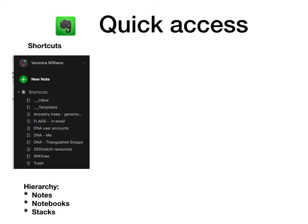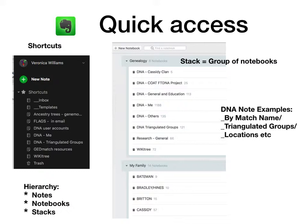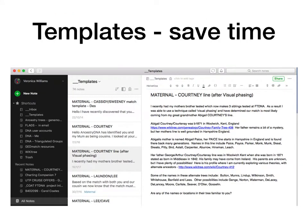Here's an example of a shortcut. Here are some notebooks, and a stack is a group of notebooks. You can see I've got a genealogy stack which consists of a number of notebooks, within which there are a number of notes. My triangulated groups notebook has 121 notes, while my DNA me notebook has 1168. Note examples might be sorted by match name, by triangulated groups, by location. It's also a great place to store templates and standard paragraphs for email insertions — I've got 74 different notes set up depending on the circumstances, and I just cut and paste those into the standard template when needed. This saves time.